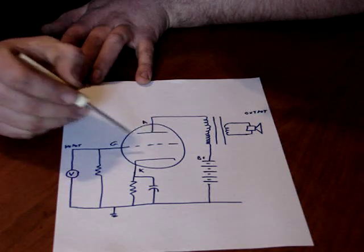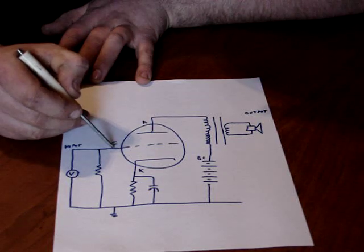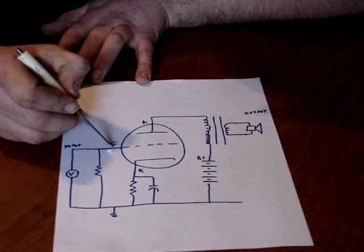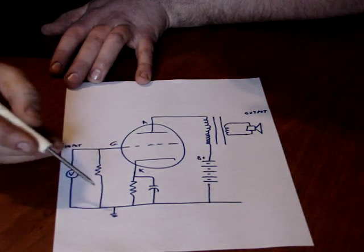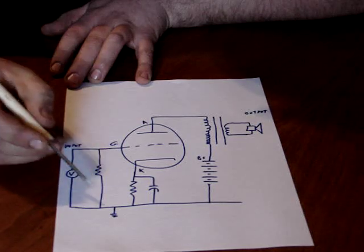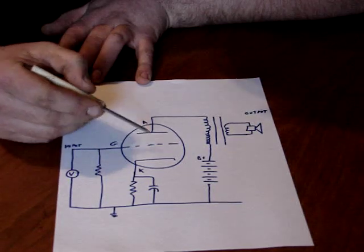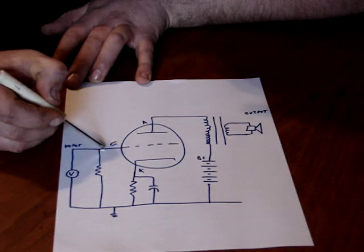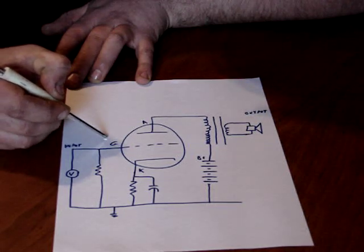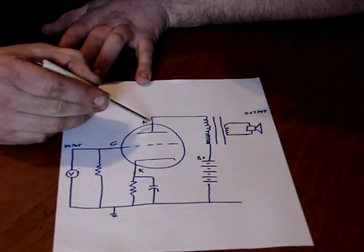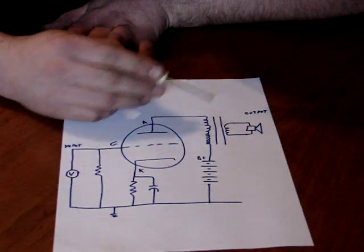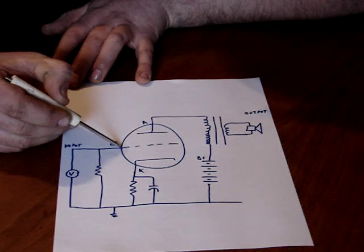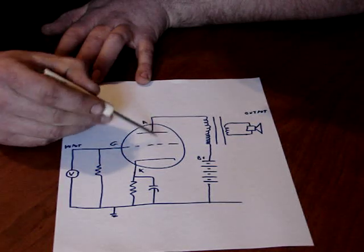So if this signal goes up positively, it's going to take the grid farther away from ground, bring it higher, not so negative, so the tube will start to conduct. That part of the cycle will be fine, because as the AC signal goes up, the tube will conduct more and more, and it will match the same signal going out. But when the signal comes back down to zero, the tube will be at cutoff.